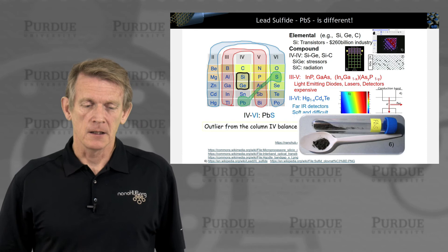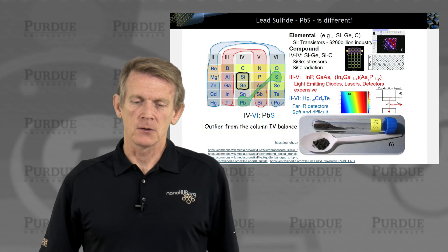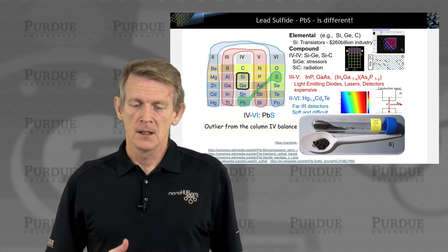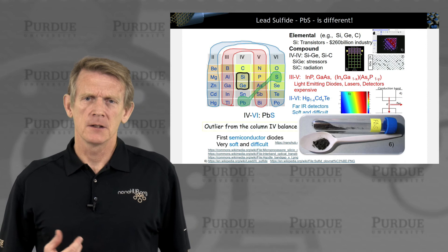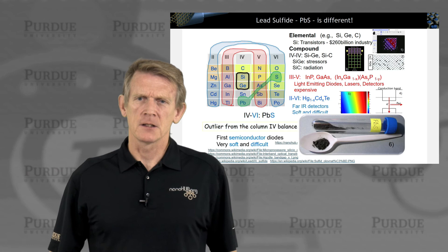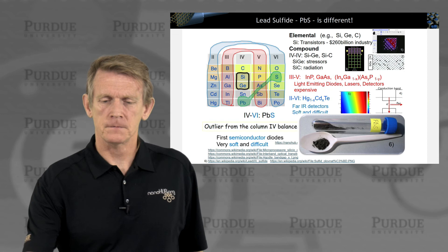Here's an outlier from the typical balancing of column-four electrons. We typically balance three-fives, two-sixes, or stay within column four. Lead sulfide is an outlier — it is one of the first materials used for semiconductor diodes, very soft and difficult to handle. It's worth being aware that such an outlier material exists and can still be semiconducting, even though it is very different from the standard semiconductors we typically deal with.